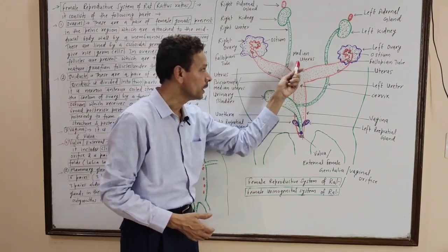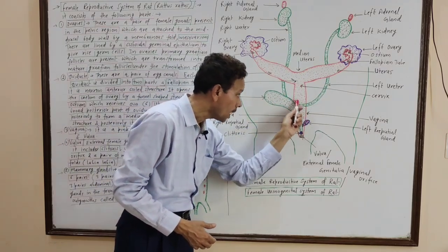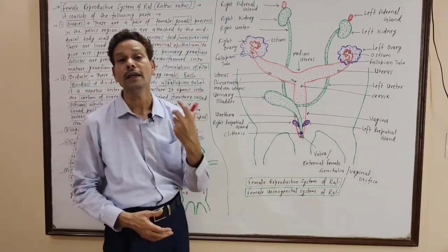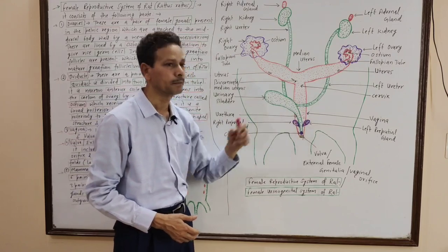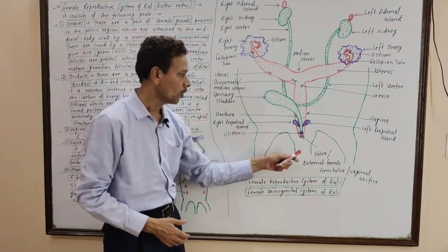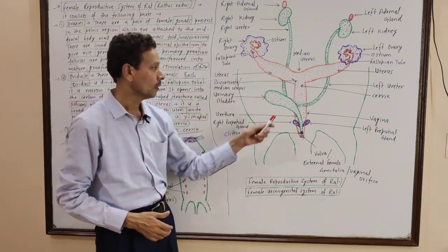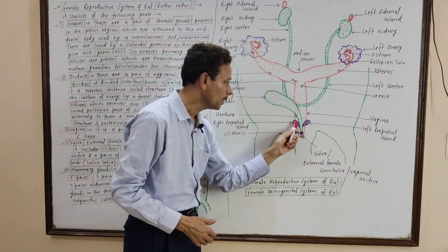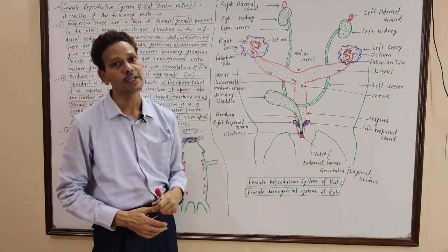The cervix opens into the vagina, which is a pinkish-red, highly vascular and glandular canal. The vagina opens by the external female genitalia, the vulva, which includes the clitoris, a pair of membranous folds called labia, and the urethra. The opening of the urethra possesses a pair of preputial glands whose secretion lubricates the external genitalia.